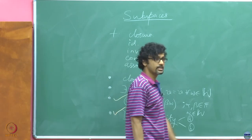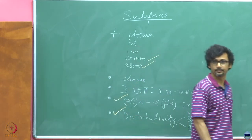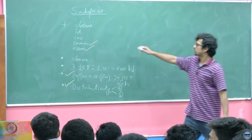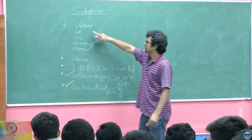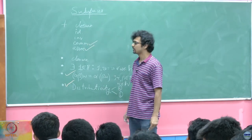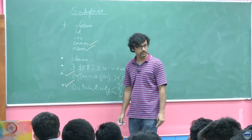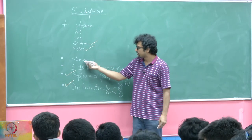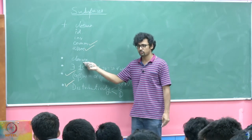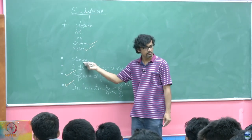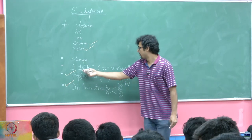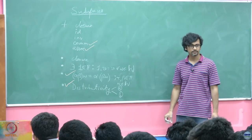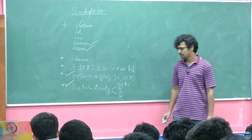What else can I say? This closure, this identity, and this inverse have to be checked for addition. And here the closure under scalar multiplication has to be checked as well. Of course, this also has to be checked.